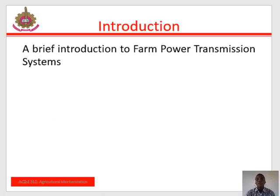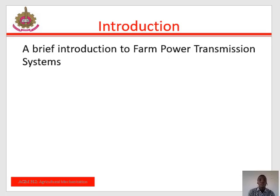Introduction. Various works are carried out in and out of the farm which are culturally related. Some of them are land clearing, land preparation, plowing, cultivation, harvesting, processing, packaging, and so on. In almost all this variety of works, machines are used to accomplish these tasks. In the process, the machine is utilized in many ways. Transmission of power in the machines from one rotating shaft to another takes place. You will learn in this study section the different methods in practice for transmitting power from one rotating shaft to another.